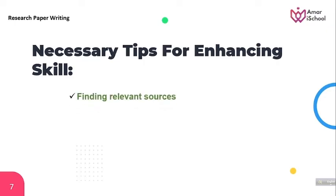First tip: finding relevant sources. If we are researching a topic, we need to find sources on that same topic to learn more about the research. This is an important part of the research process.